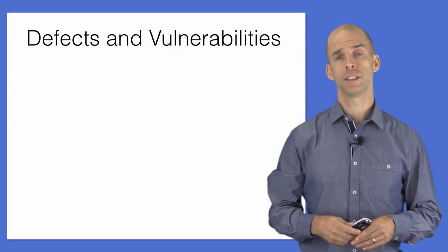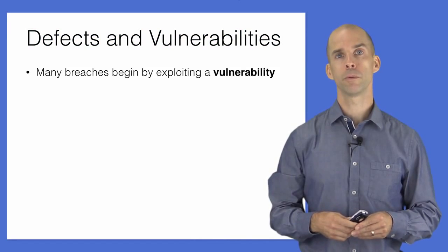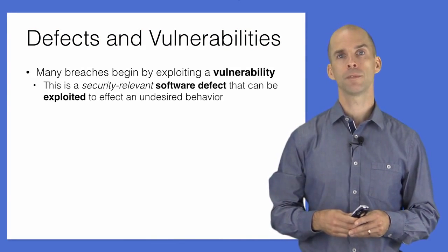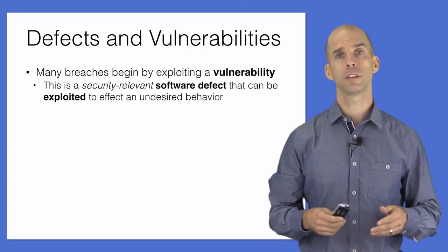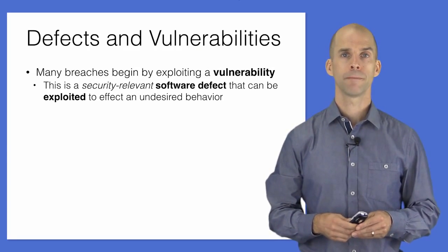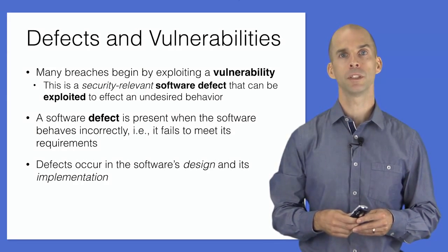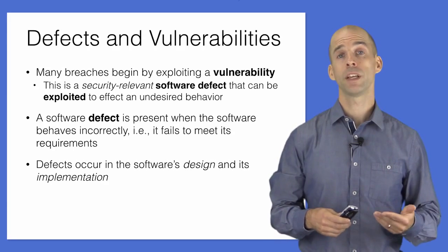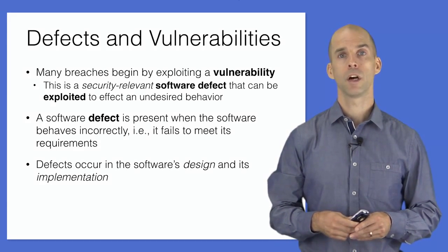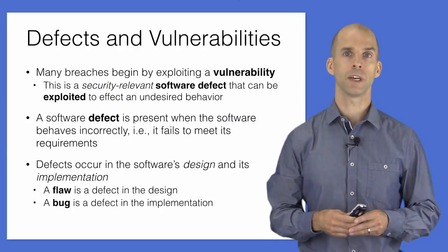How did the attackers breach these systems? Many breaches begin with the exploitation of a vulnerability. A vulnerability is a defect that an adversary can exploit through carefully crafted interactions to get the system to behave insecurely. In general, a defect is a problem in the design or implementation of the system such that it fails to meet its requirements — it fails to behave correctly. A flaw is a defect in the design, while a bug is a defect in the implementation.